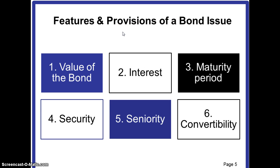Now let's look at some basic features and provisions of a bond issue. We begin with the value of the bond. A bond has a par value, which is also known as the face value or the nominal value. We generally assume that the par value of a bond is $1,000, or multiples of a thousand. The par value generally represents the amount of money that the firm borrows against the issue of a bond and promises to repay on the maturity date. The par value of the bond is the same as the principal amount of the debt.